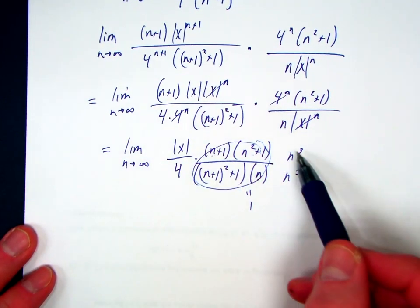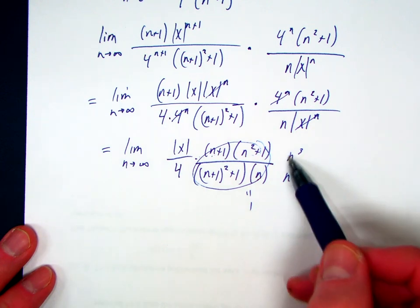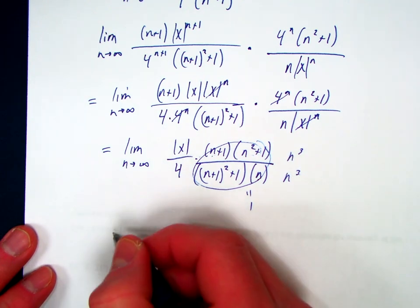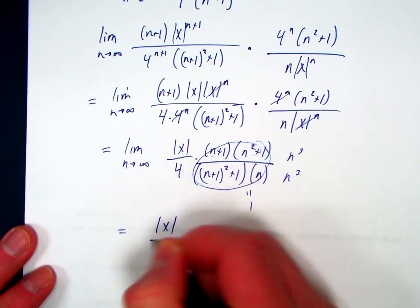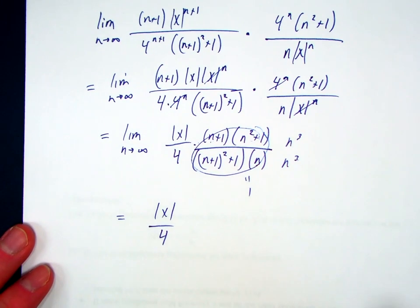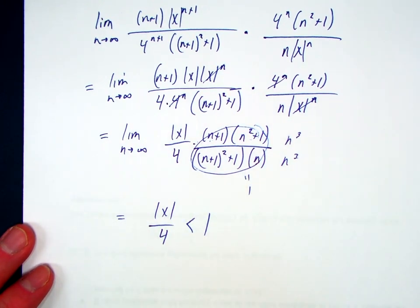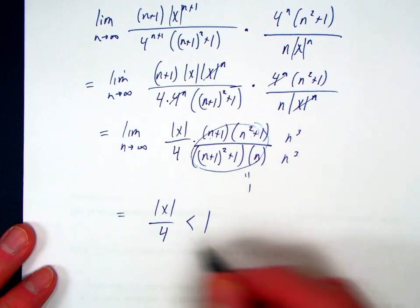So we take the limit using our rules like we've done before. We look at the leading coefficients. 1 over 1 is 1. All we're left with is absolute value of x over 4. We want values that make that convergence. That is less than what?